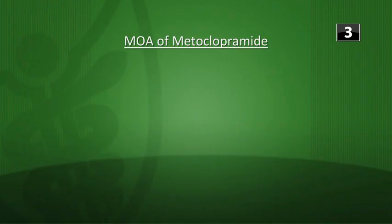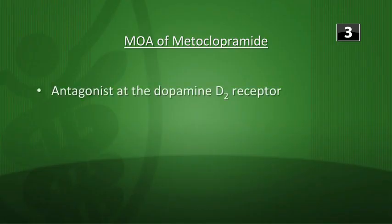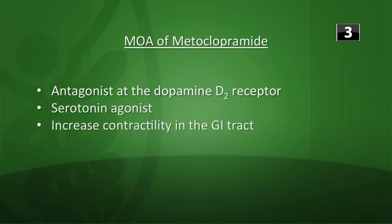What is the mechanism of action of metoclopramide? It's an antagonist at the dopamine D2 receptor and also a serotonin agonist. So it will increase contractility in the GI tract and move things along.